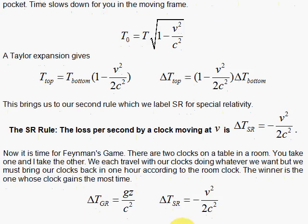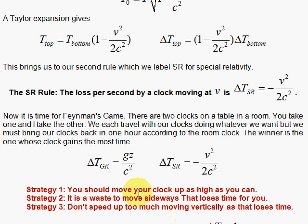I gain time if I have the clock high up, and I lose time if I move. So we have some strategies here. Strategy one: you should move your clock up as high as you can. You want that z as high as you can. That's going to be good. Strategy two: it's a waste to move sideways, because if you move sideways you don't change z and you're getting penalized. Whenever you move, you get penalized. V not being zero, you're getting penalized. Strategy three is: don't speed up too much when you're getting up to that high, because if you speed up a lot, then your v is going to be great. So you kind of have to do a trade-off here. You don't want to move too slow because you won't go anywhere. That's the game: play around and see who can win.